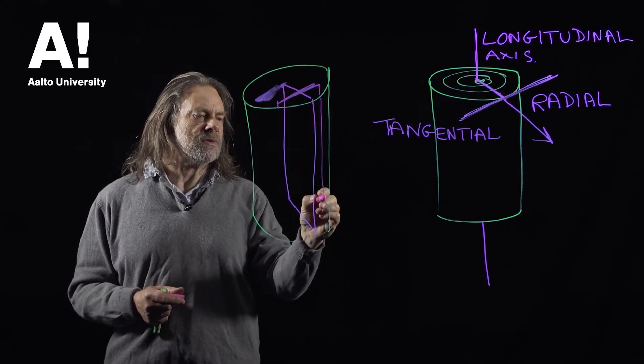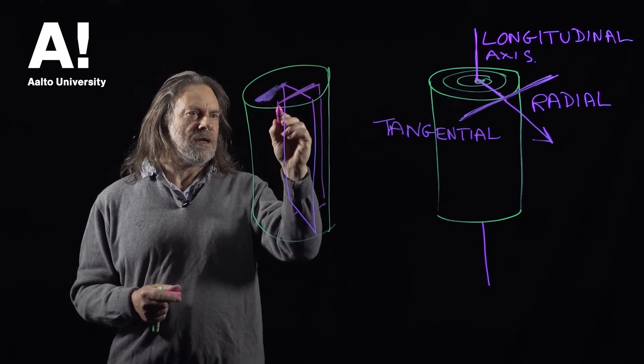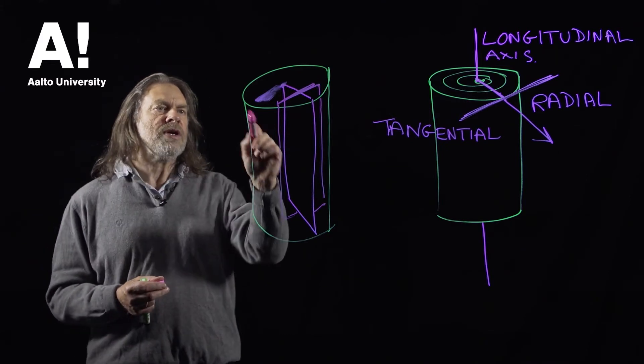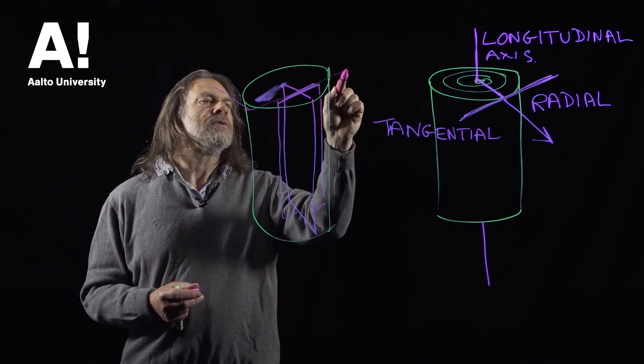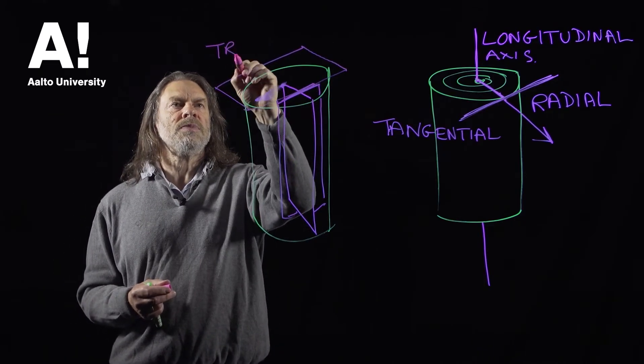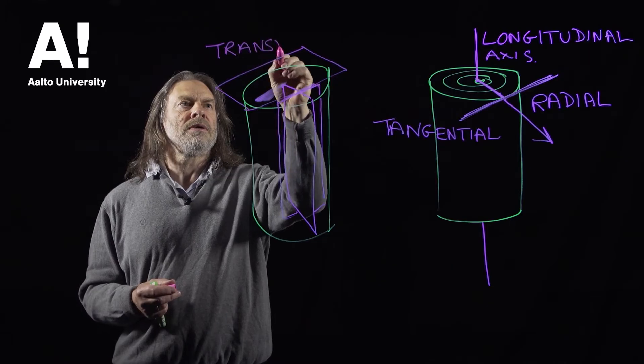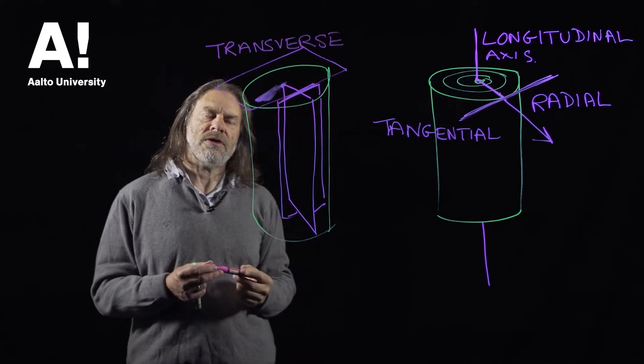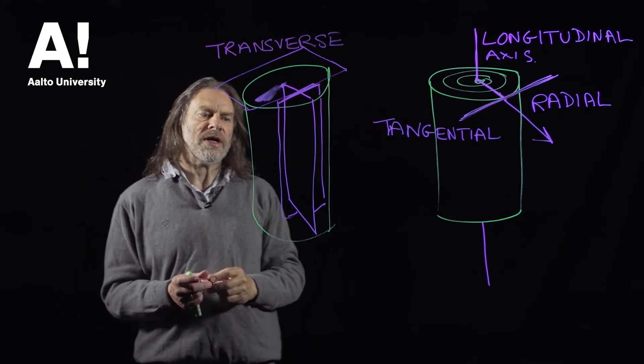So that would be a tangential longitudinal plane, and then we can have running across there, that is referred to as a transverse plane. And obviously the wood's going to look different depending on which direction we're looking at.